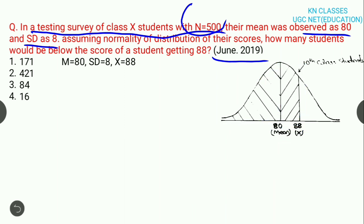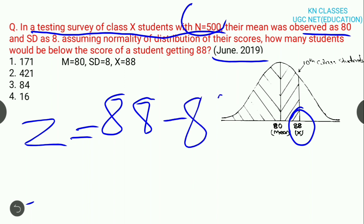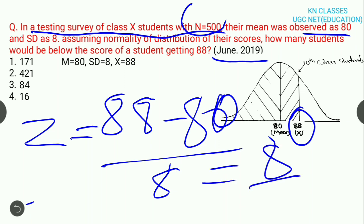Now see, here use the Z score formula. Z is x minus m divided by SD. Here, x is 88 score. Z is 88 minus mean. Mean is 80 divided by standard deviation 8. 88 minus 80 is 8, and 8 divided by 8 is 1. So 1 table value is 34%.